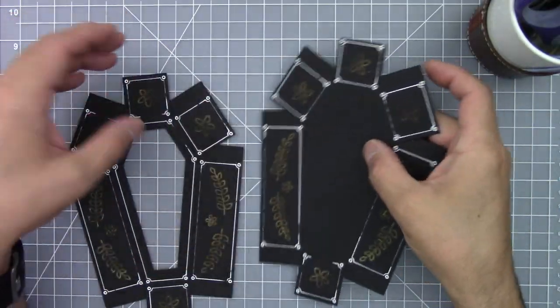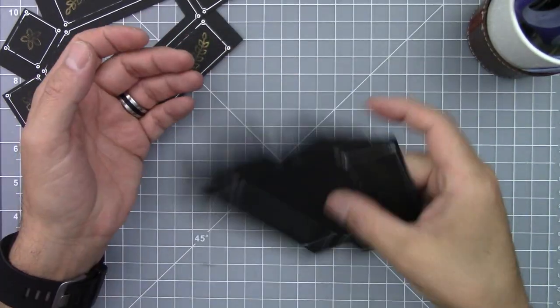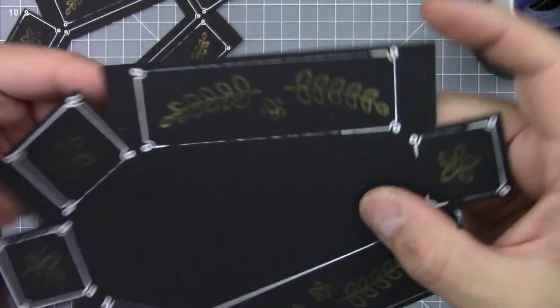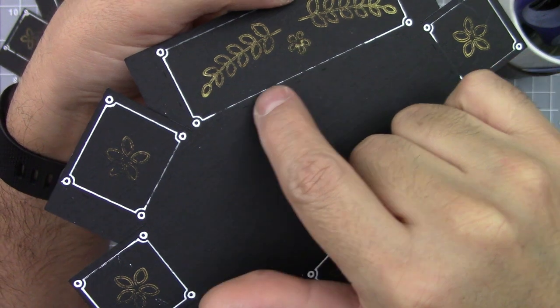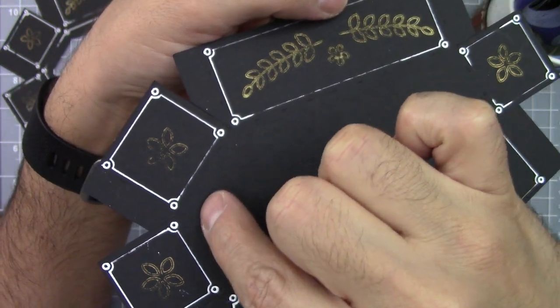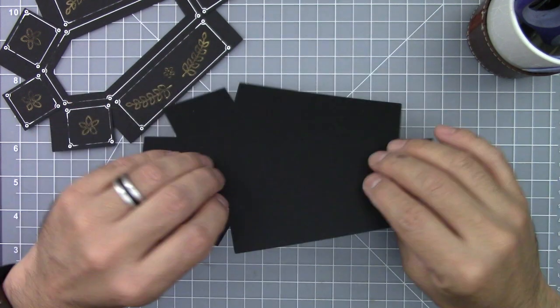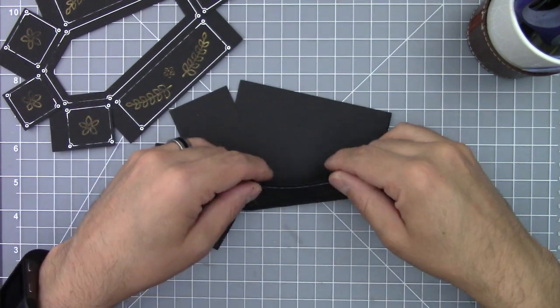And now it's time to start assembling your coffins. First make sure all the ink is dry, and then follow the dotted lines that your Cricut cut. These are your folding guides.